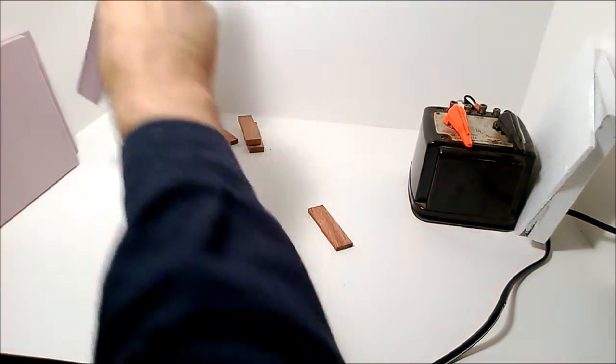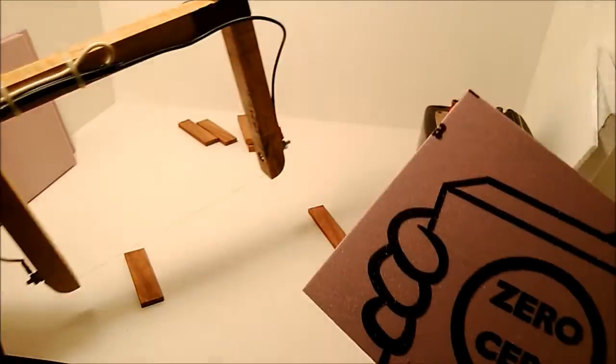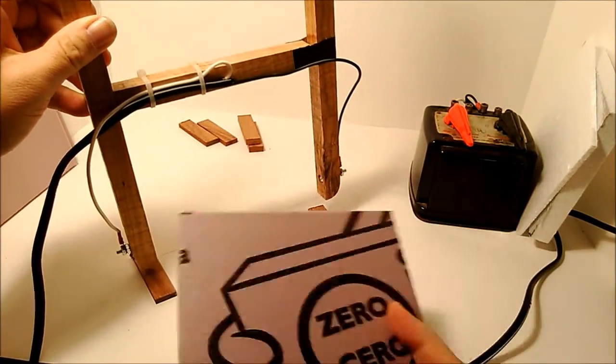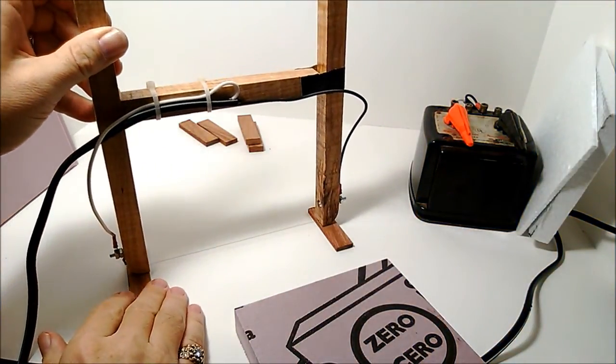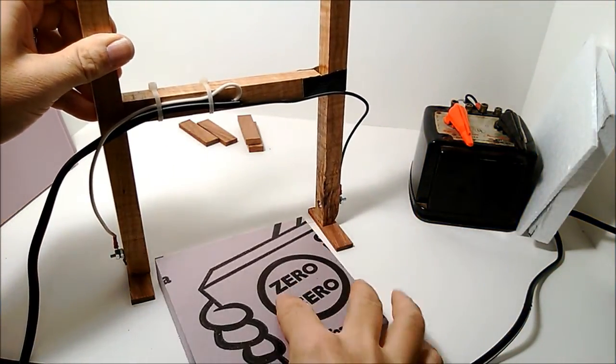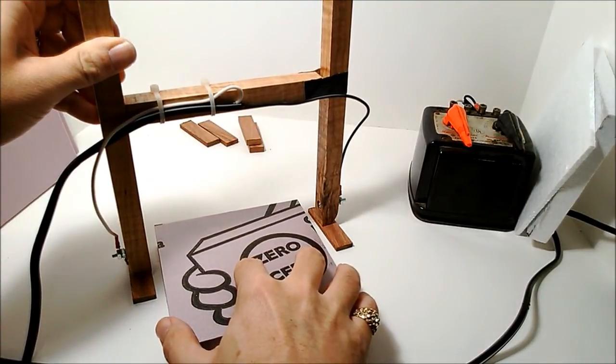So this is a piece of heavier density foam insulation. This is a closed cell foam, and it has a slightly higher melting point. So it takes a little bit longer to cut, but it'll still cut.